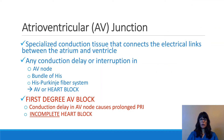The atrioventricular junction is a specialized conduction tissue that connects the electrical links between the atria and the ventricles. Medical terminology always gives away the solution — AV junction is the connection between the atrium and the ventricle. Any conduction delay or interruption in the AV junction — including the AV node, the bundle of His, or the Purkinje fiber system — can cause an AV or heart block.